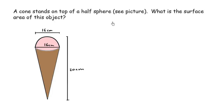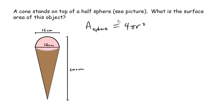Let's focus on the top part. The surface area of a sphere — recall — is equal to 4πr². And what we have here is half of that. The area of half a sphere is equal to half of this, which is 2πr².